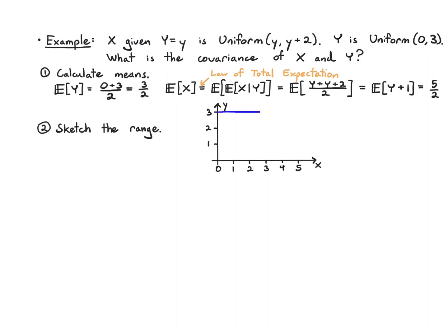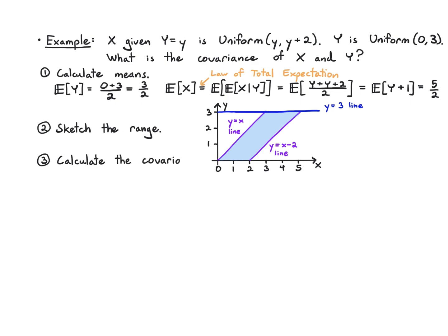In the sketch: we have the line y equals 3 (can't go past that), the line y equals x (stay to the right), and the line y equals x minus 2 (stay to the left). Now we calculate the covariance using the original formula: x minus its mean times y minus its mean, averaged over the joint PDF. That means a double integral of (x minus 5/2) times (y minus 3/2) times the joint PDF dx dy.